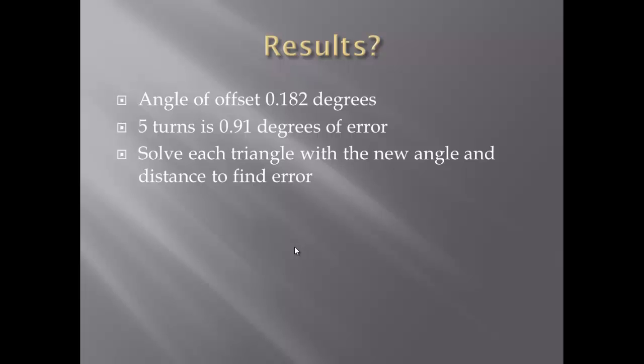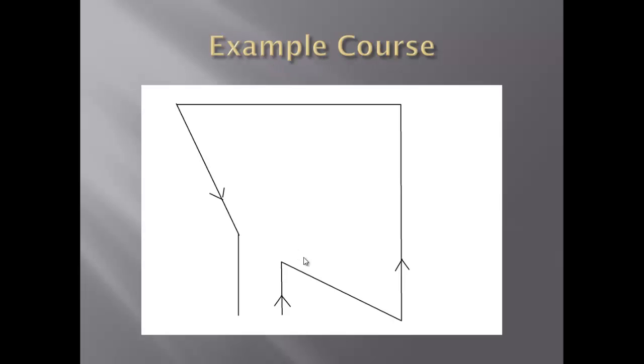However, if we go back to this course, if your turn is a little bit off here, then you're going to go like this, and then you make your next turn, say you under turn, so you go like here. Here, you can see where you actually end off is way far from your actual wanting-to-be place.